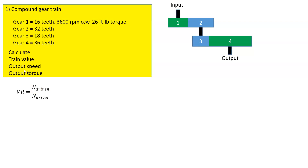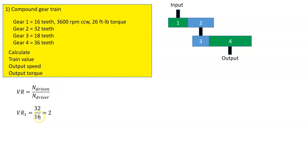So let's work on this first problem — a compound gear train. You can see the input going into gear number one and the output going out of gear number four. The first gear is 16 teeth, the second gear is 32 teeth, the third gear is 18 teeth, and the fourth gear is 36 teeth. We're trying to calculate the train value, the output speed, and the output torque. The velocity ratio is based on the number of teeth on the driven gear versus the number of teeth on the driver gear. The driven gear for the first set is 32 and the driver gear is 16 teeth, giving a velocity ratio of two.